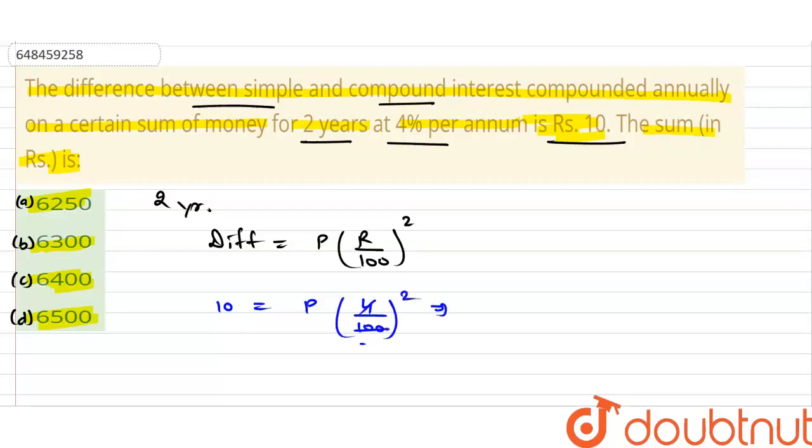Let's solve this. 4 will cancel to give 25. We can write: 10 equals P upon 25 square, which is 625. So the value of P will be 6250 rupees. The answer is option A.